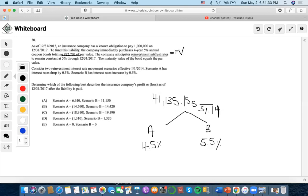So what we're going to do is use the TVM. 41,135.15 is the payment. 4.5 is the interest rate. 4 is the number of years. 0 is the present value, compute future value. So we're going to get 175,984.03.